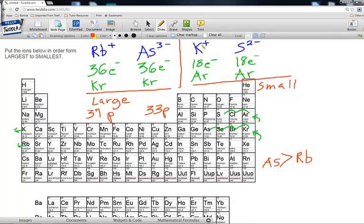Now to distinguish between K+ and S2-. We again look at their protons. K has 19 protons. S has 16 protons. Therefore whoever has more protons is smaller, whoever has less protons is bigger. So our next biggest one is going to be less protons. So that will be S and then our last biggest one or our smallest one will be K.